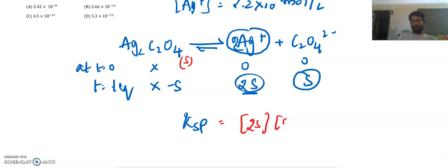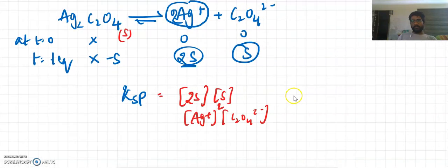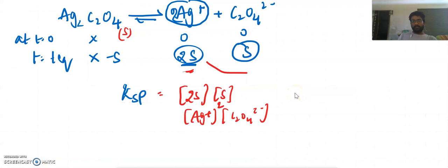2s into s, or we can even call Ag+ into C2O4 2 minus, right, Ag+ square because we are having 2 Ag. Now in our question 2s is given as 2.2 into 10 power minus 4 mole per litre.